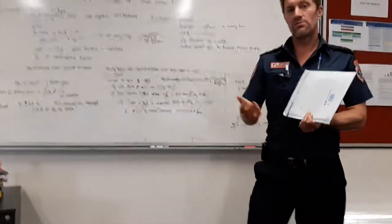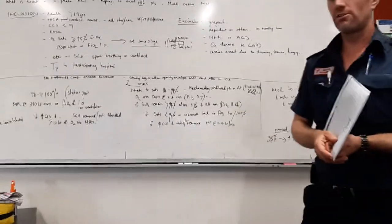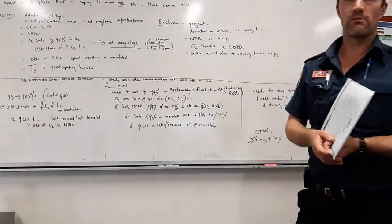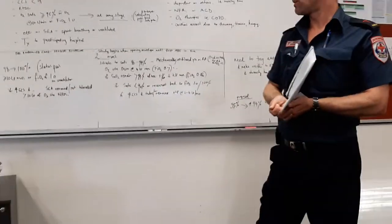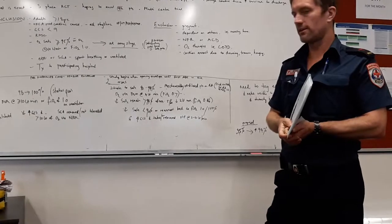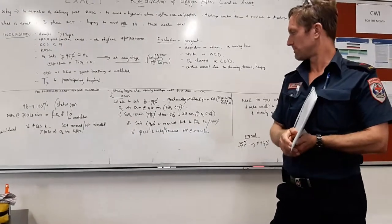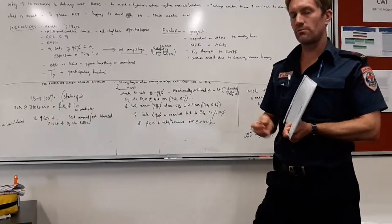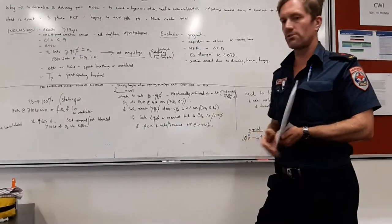If the SATs at any stage drop below 90%, or the patient re-arrests, we're obviously going back to how we treat them. That's with high-flow oxygen, or FiO2 of 100%. And if we happen to lose a tube, or unable to gain a tube with RSI, we'll be going on nasal prongs at 2 to 4 liters.